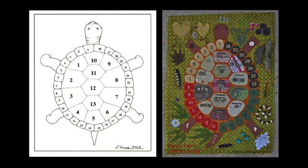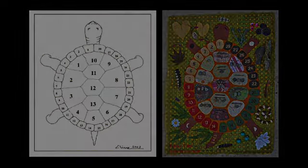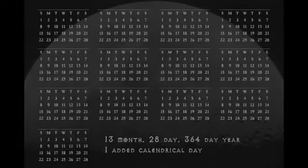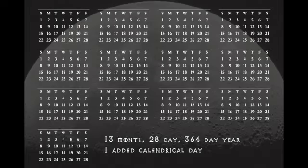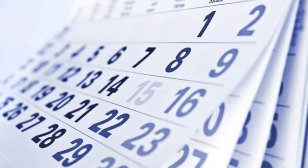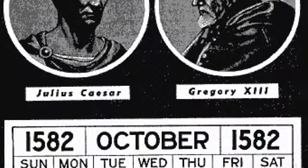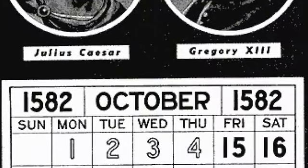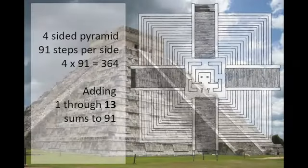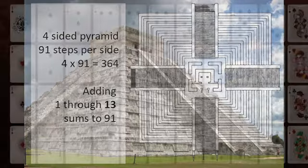A calendar of 13 months and 28 days per month creates a 364-day year, with an extra non-calendrical day added each year, allowing for an easy link up to the solar calendar. The brilliance and simplicity of this calendar is that every day and month is the exact same as the previous year — something amiss in our current Gregorian calendar. The mathematics of this calendar is cleverly encoded within the popular Mayan Chichen Itza temple, as well as in the common deck of cards.